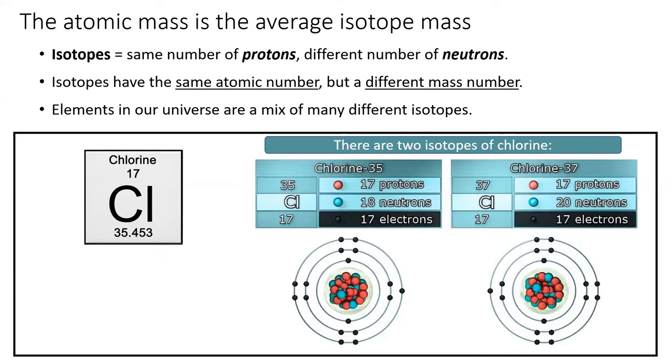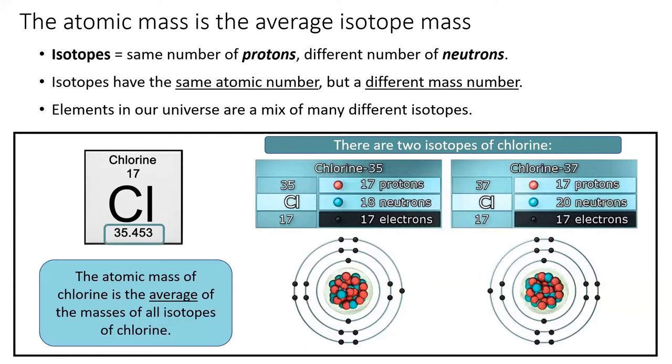All the elements in our universe are a mix of many different isotopes, and every sample of chlorine contains atoms of both chlorine-35 and chlorine-37. The atomic mass is the average mass of an atom of that element. The average mass of chlorine is 35.45, which is in between the masses of the two isotopes of chlorine.